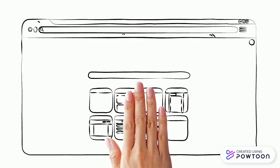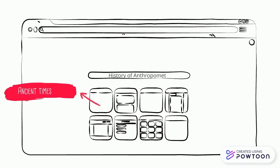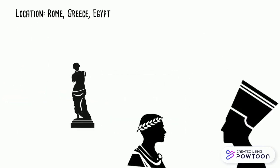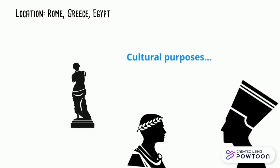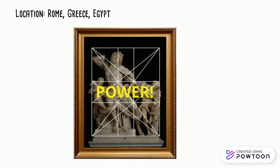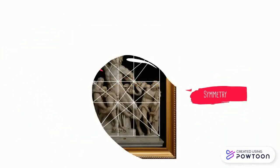Here is a timeline of the evolution of anthropometry. In the ancient civilizations of Rome, Greece, and Egypt, anthropometry was used for cultural purposes — for example, artwork. Sculptures were a sign of power and they had to have desirable and symmetric attributes.